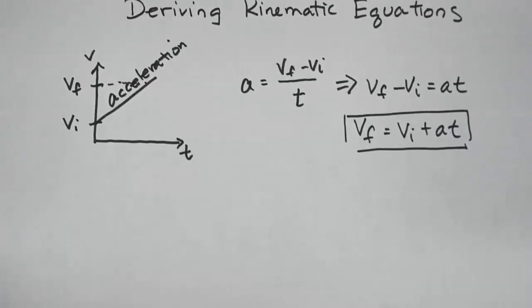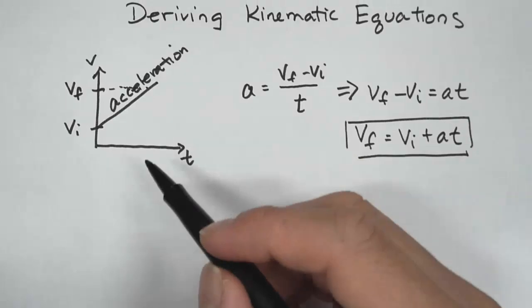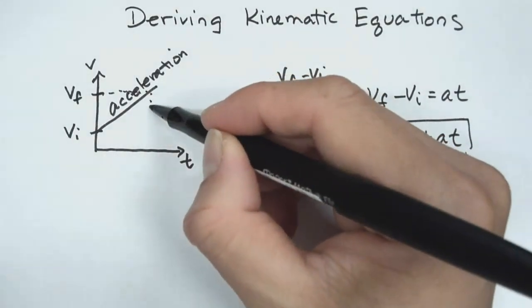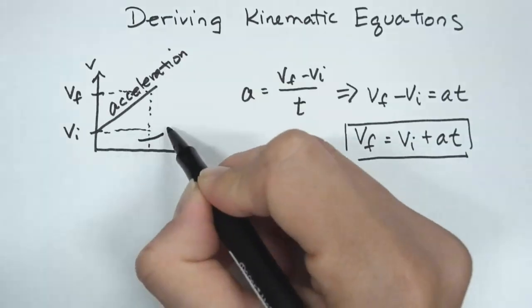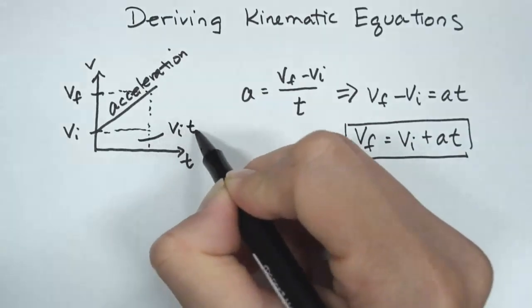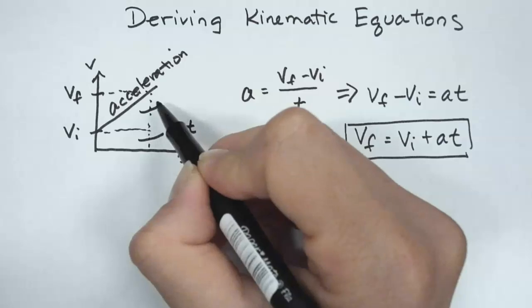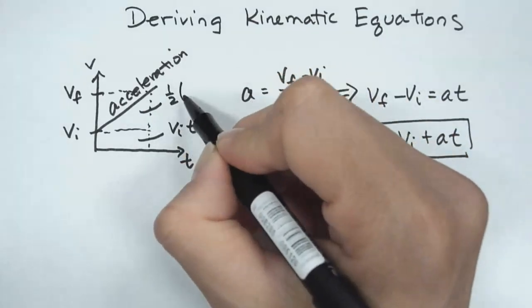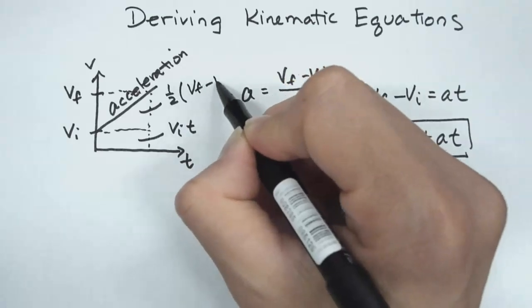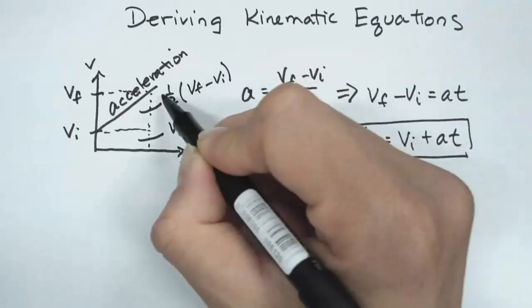Our second kinematic equation, we're going to use the idea of the area under the curve that it represents the displacement. So this area right here is vi times t. And this area right here is a triangle, so 1/2 base times height. The height is vf minus vi times t.